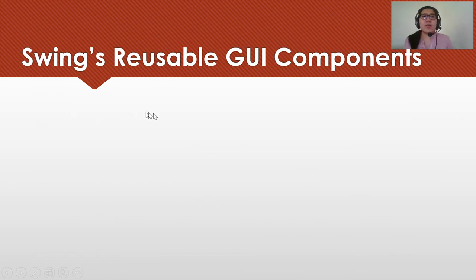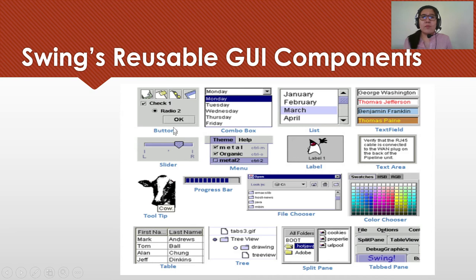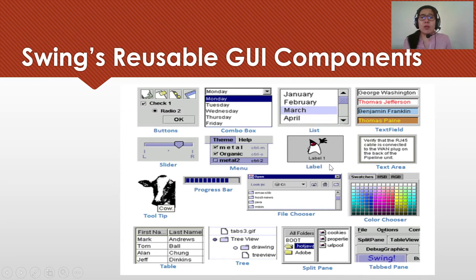We have here the different SWING reusable GUI components: buttons, combo box, list, text field, slider, menu, label, text area, tool tip, progress bar, file chooser, color chooser, table, tree, split pane, and tab pane. But the commonly used GUI components are buttons, combo box, text field, label, and text area.